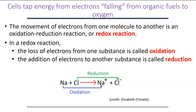Redox reactions involve some molecules donating or losing electrons. When something loses an electron, something else is going to gain those electrons. For us in our eukaryotic cells, we are going to oxidize glucose — glucose is going to lose electrons — and something else is going to have to accept those electrons.